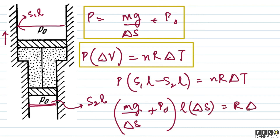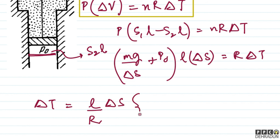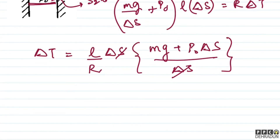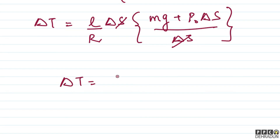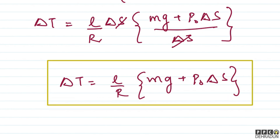With n = 1 mole, this simplifies to R·ΔT. So ΔT = L/(R·ΔS) multiplied by (Mg + P₀·ΔS). Simplifying, ΔT = L·(Mg + P₀·ΔS) / (R·ΔS). This is the final answer. I hope you have understood this solution well. All right.